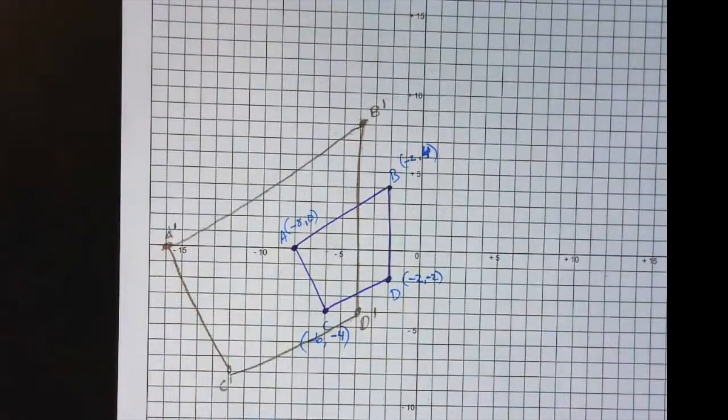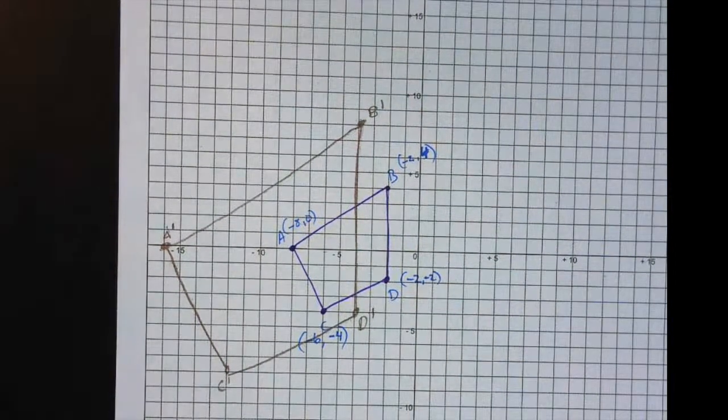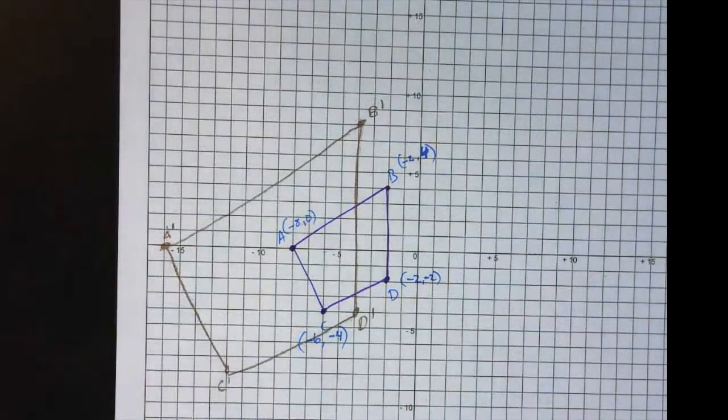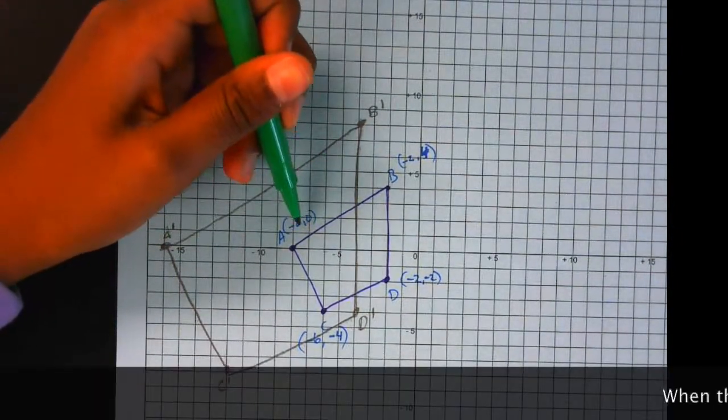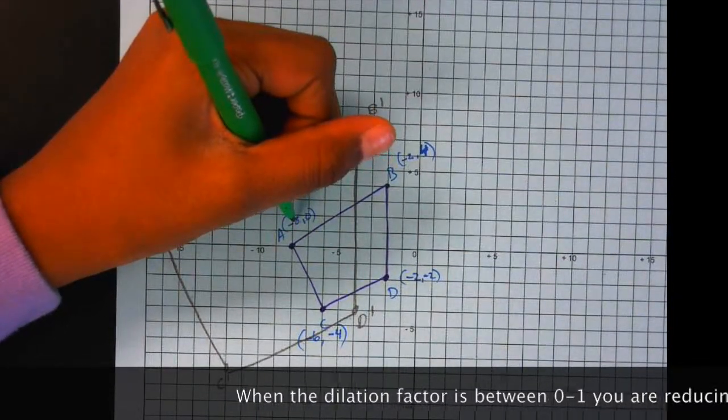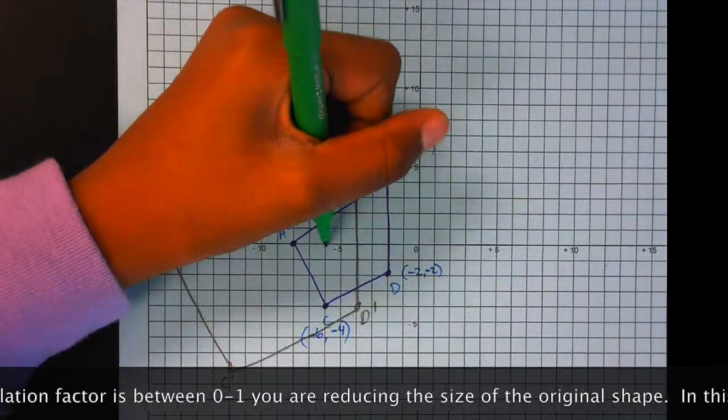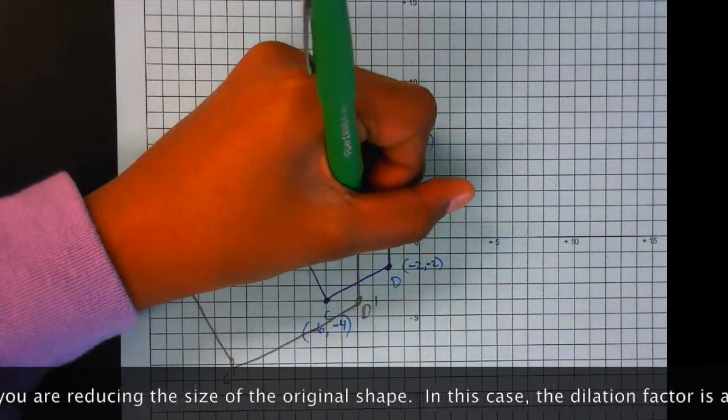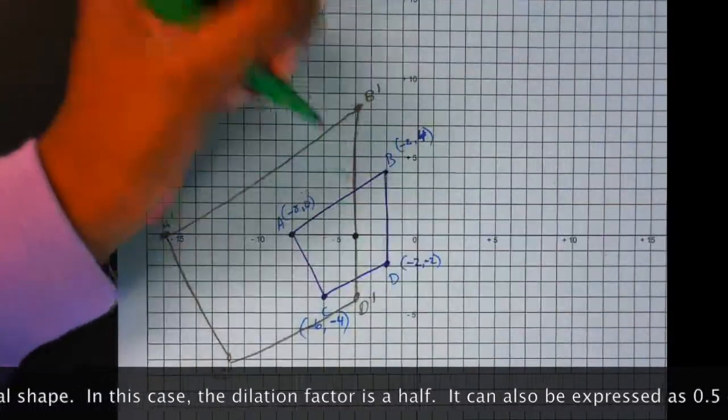Who wants to share their method of doing the next one, which is multiplying it by a factor of a half? Aaliyah, come on up. So show us what you did. So the first thing we did is that instead of multiplying the coordinates by two, we divided them by two. So A would be negative four and zero. So it would be right here. So that would be A prime prime.